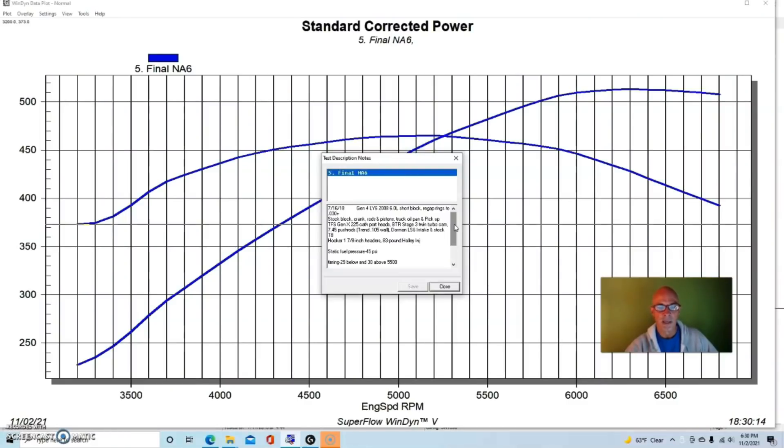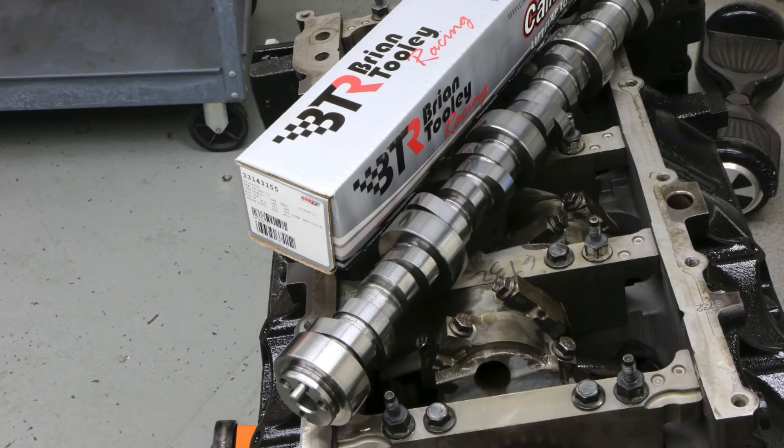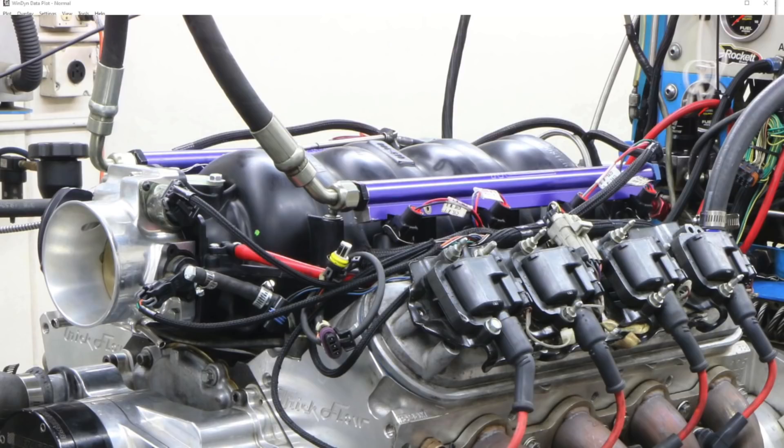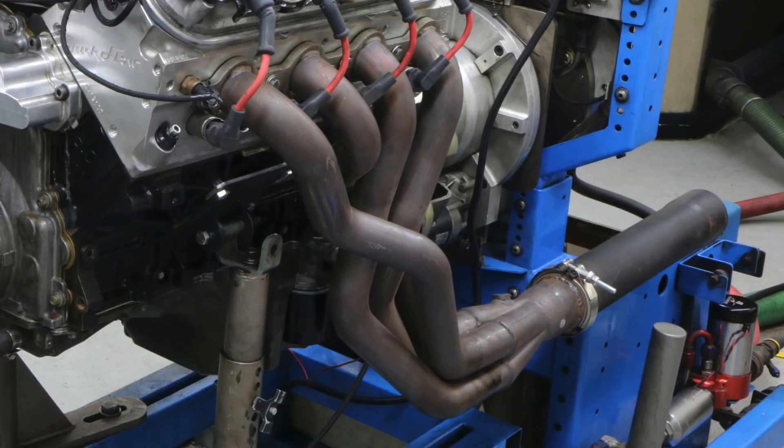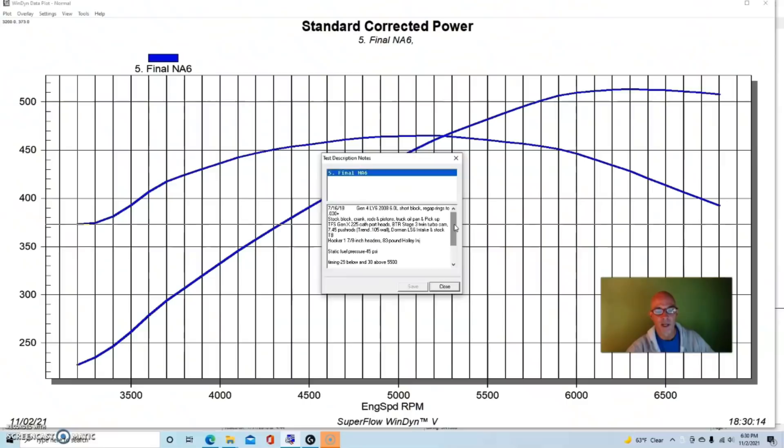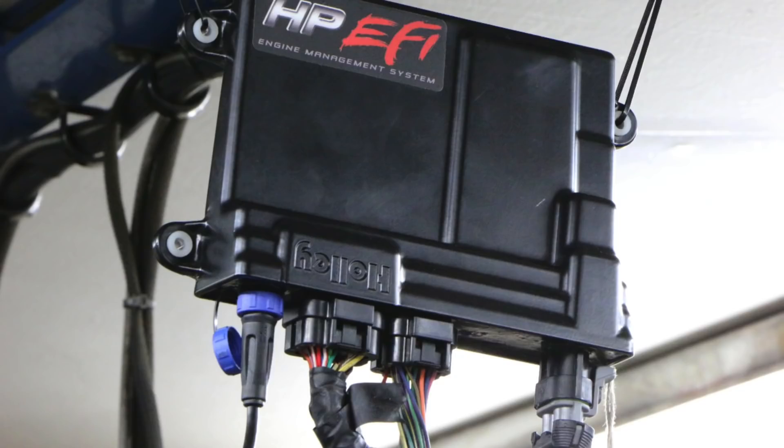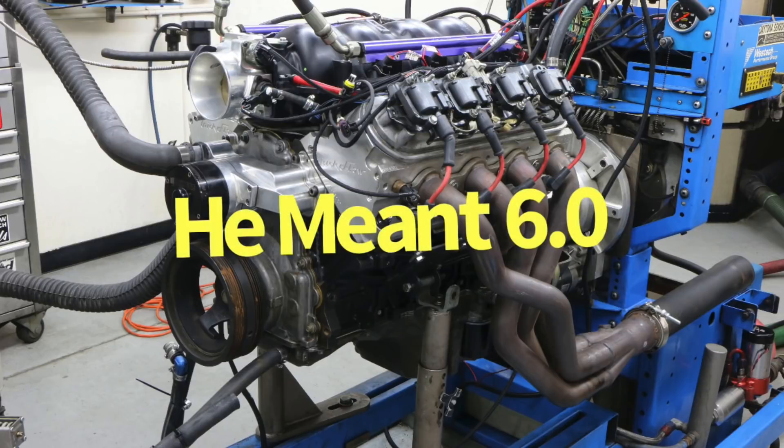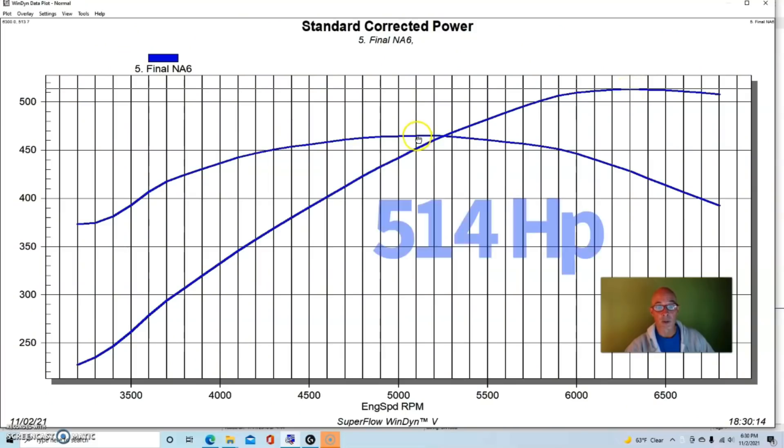It had a Brian Tooley Racing Stage 3 twin turbo cam. It had a Dorman LS6 intake manifold and Hooker inch and seven-eighths headers. Run in NA trim, 83 pound Holleys and a Holley HP management system. So it worked out very well. Run in NA trim this produced 514 horsepower, 465 foot-pounds of torque.